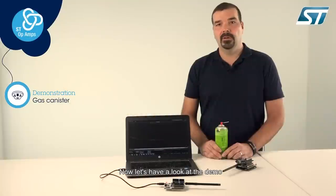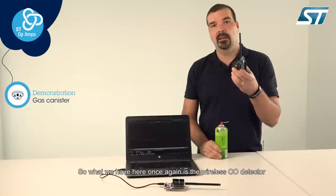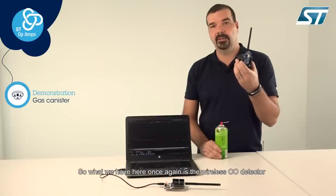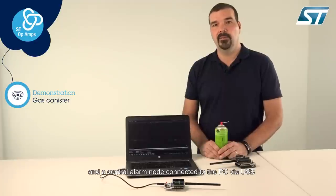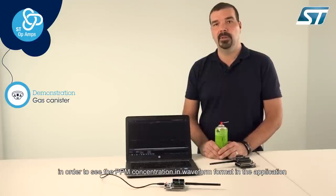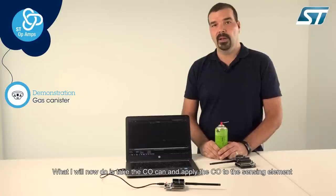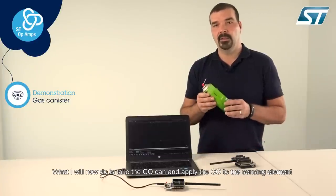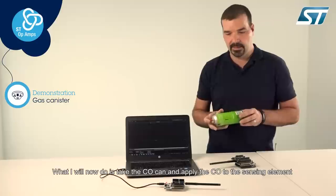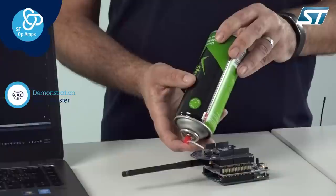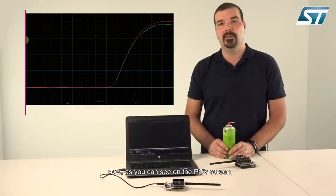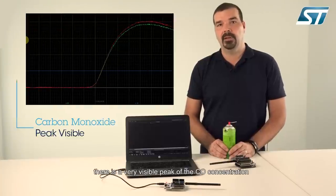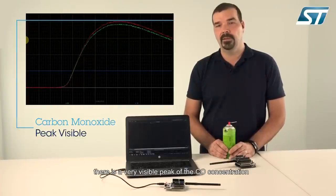Now let's have a look at the demo. What we have here once again is the wireless carbon monoxide detector and the central alarm node, which is connected to the PC via USB in order to see the PPM concentration in a waveform in the application. I will take the carbon monoxide can and apply the carbon monoxide to the sensing element. As you can see on the screen of the PC, there is a peak of the carbon monoxide concentration very well visible.